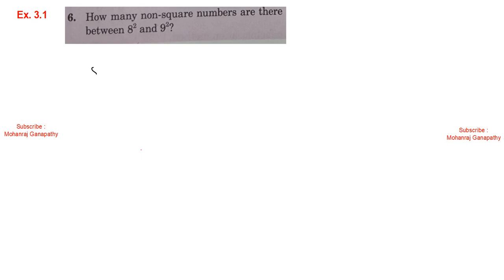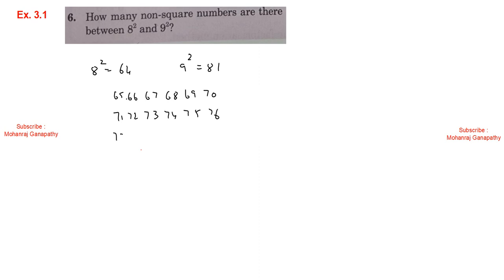Exercise 3.1, sum number 6: How many non-square numbers are there between 8 squared and 9 squared? 8 squared is 64, 9 squared is 81. The non-square numbers between 64 and 81 are: 65, 66, 67, 68, 69, 70, 71, 72, 73, 74, 75, 76, 77, 78, 79, 80 — a total of 16 non-square numbers.